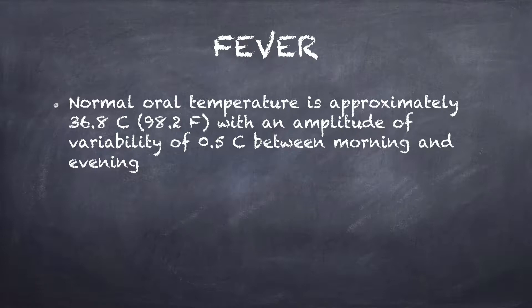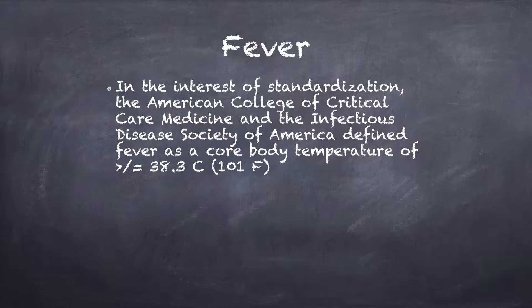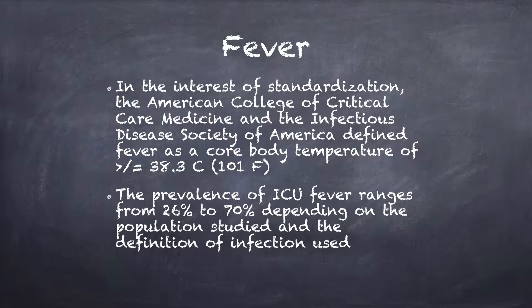Normal oral temperature is approximately 36.8 degrees Celsius or 98.2 degrees Fahrenheit, with an amplitude of variability of approximately 0.5 degrees Celsius between morning and evening. During critical illness, the variability can be even greater due to disruption in the circadian rhythm, autonomic disturbances, drugs, ICU environment, and artifact. The American College of Critical Care Medicine and the Infectious Disease Society of America define fever as a core body temperature of above or equal to 38.3 degrees Celsius or 101 degrees Fahrenheit. The prevalence of ICU fever ranges from about 26% to 70%, depending on the population studied and the definition of infection used.